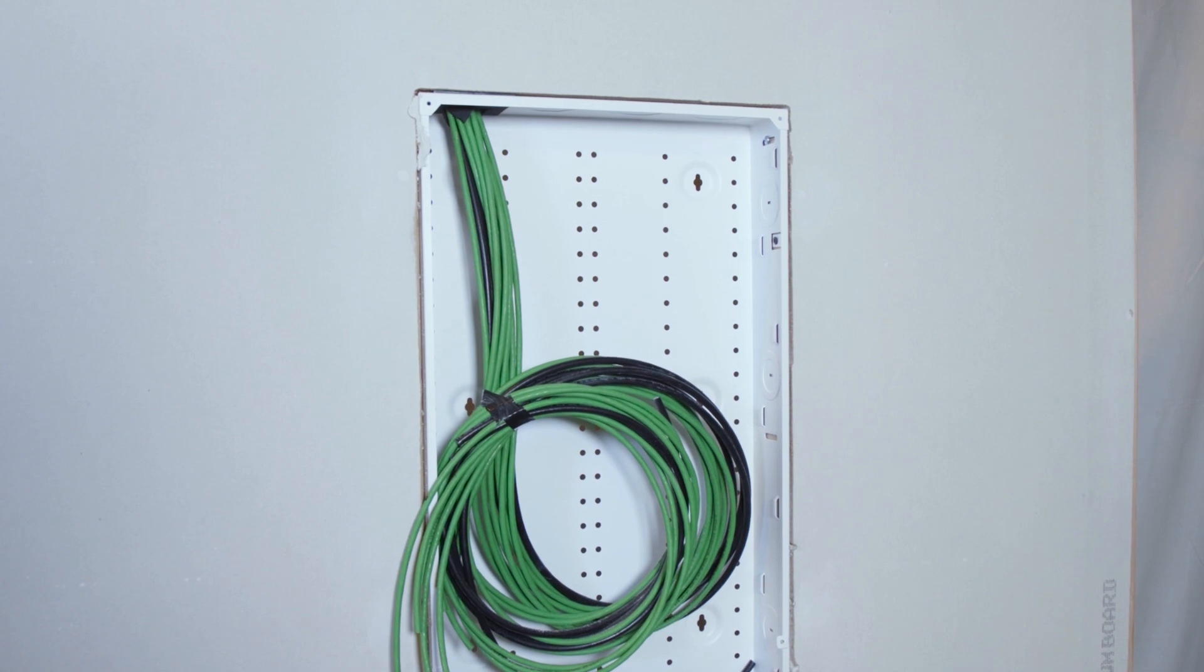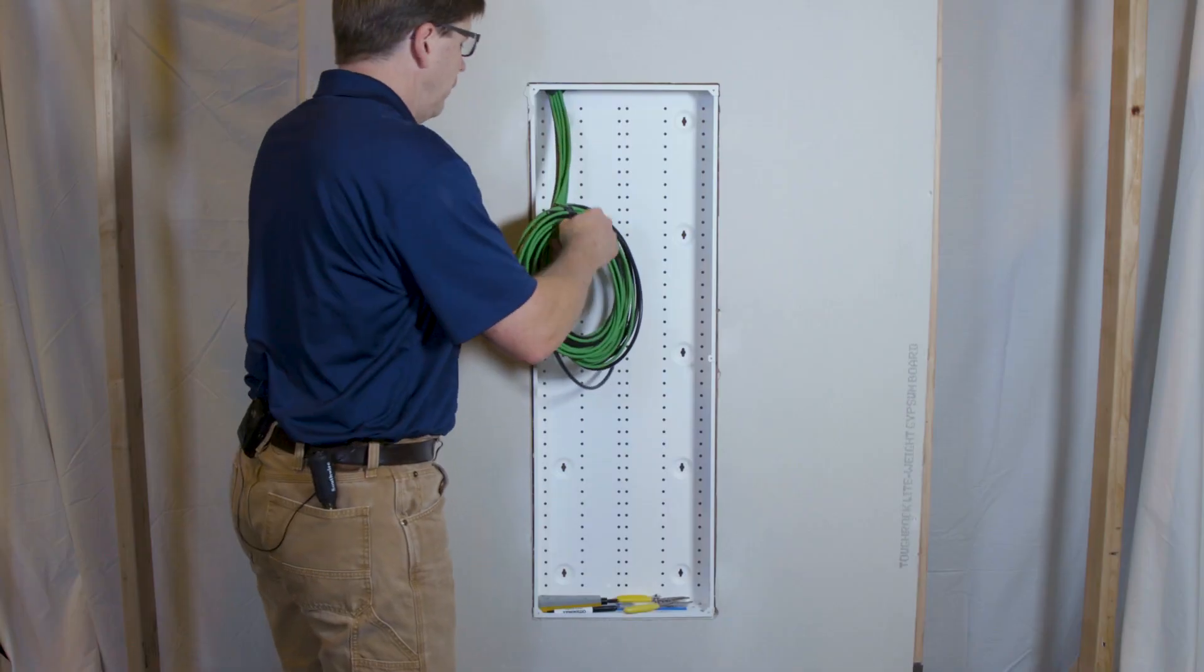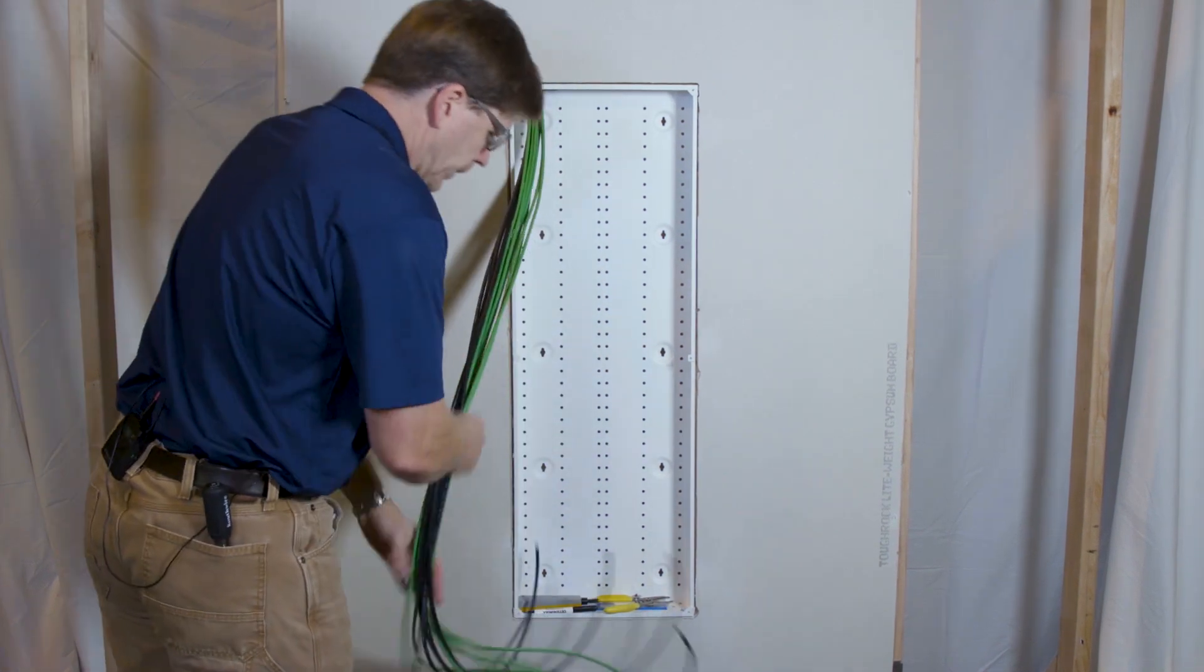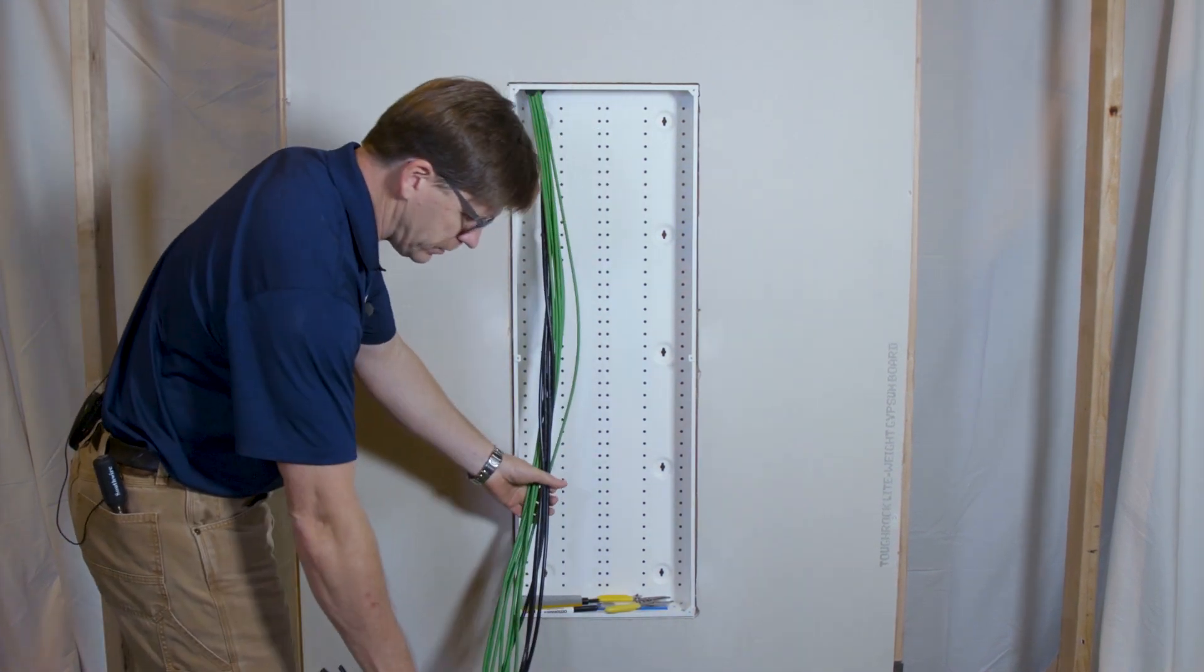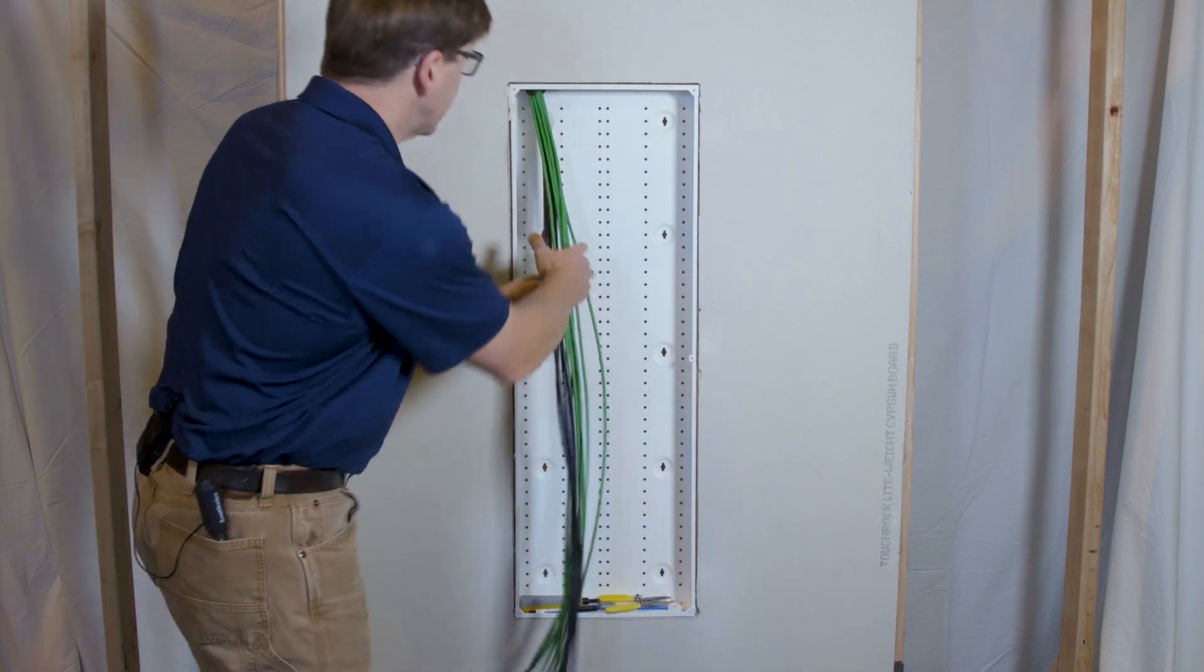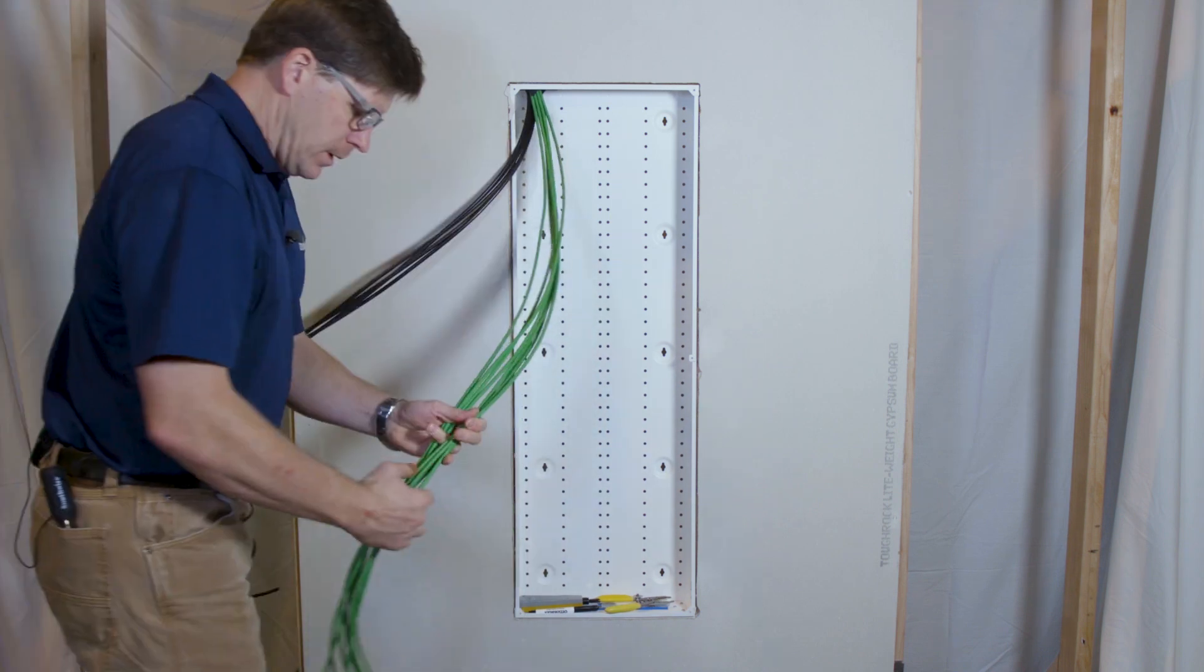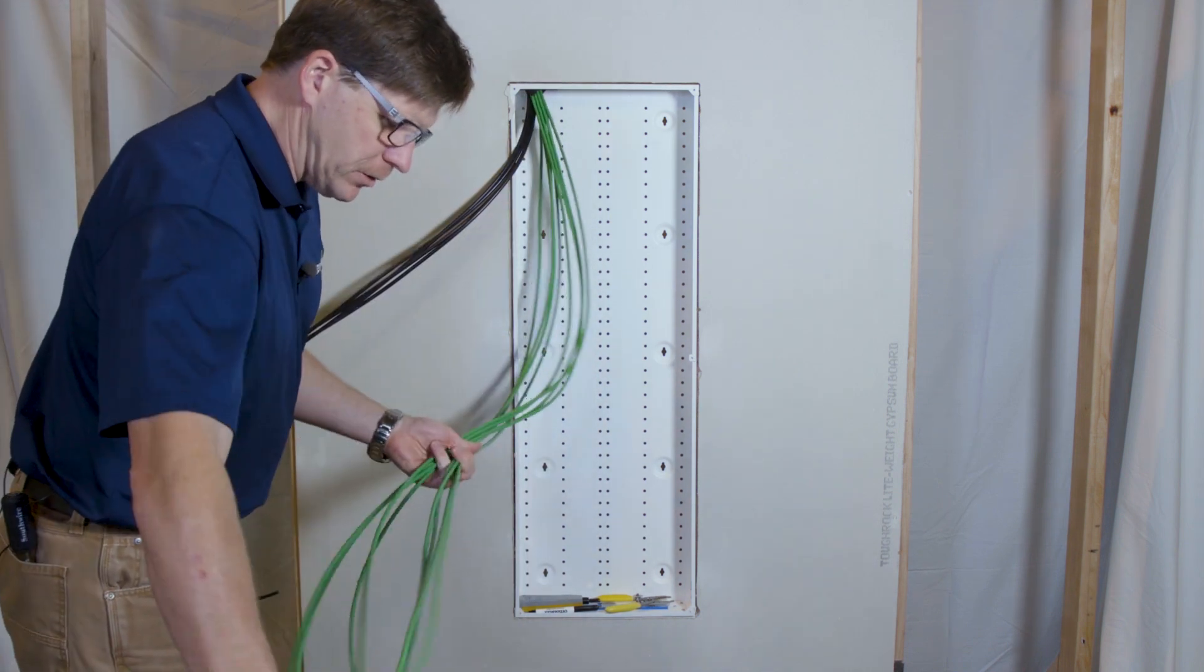I can proceed to start terminating the cables now. Let's undo our cable bundle. So we have plenty of slack to reach anywhere in the enclosure. I'm going to focus first on the category cables. We'll get these coaxial cables out of the way. These cables were marked as they were installed.